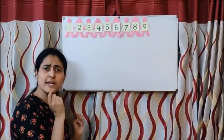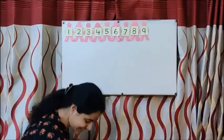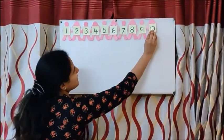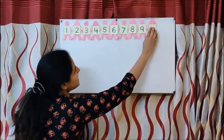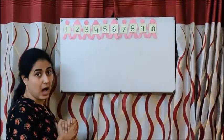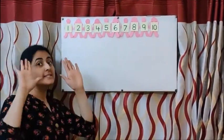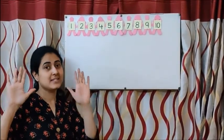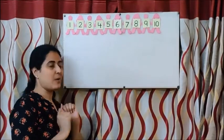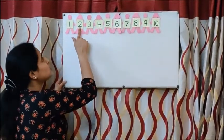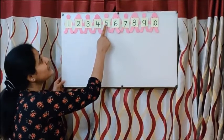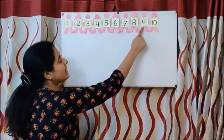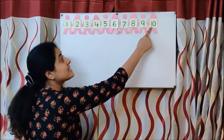What comes after 9, children? Very good — number ten. So number ten has also come here. Now we have got ten little Indians, and this is our poem: Ten Little Indians. So now let us sing again: one little, two little, three little Indians; four little, five little, six little Indians; seven little, eight little, nine little Indians; ten little Indian boys.